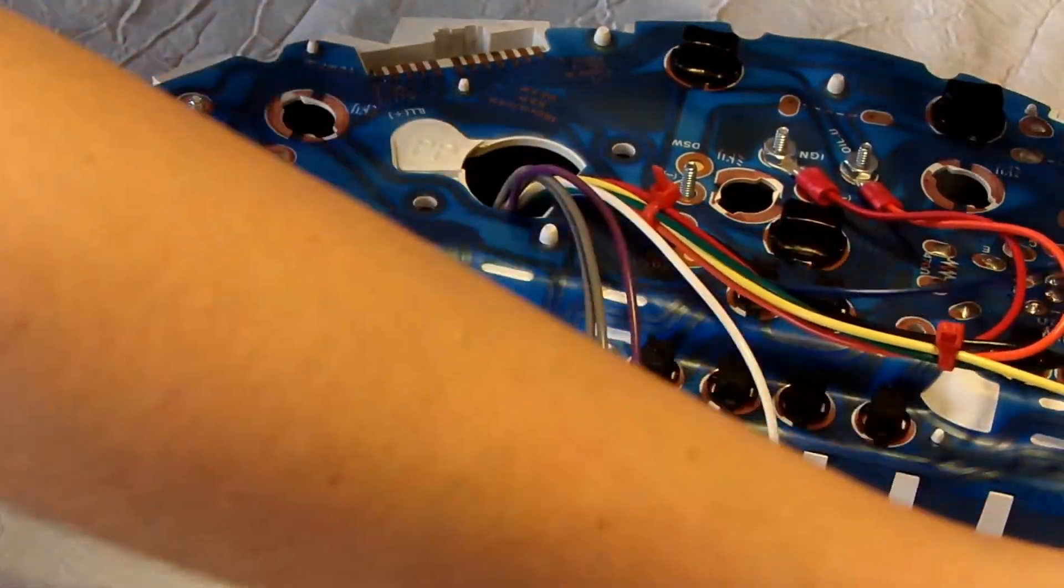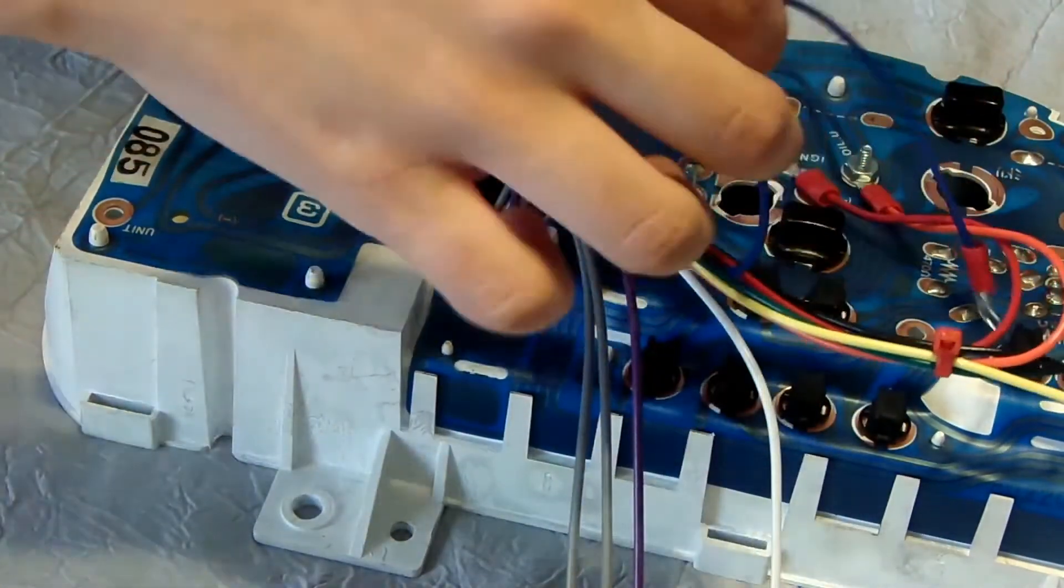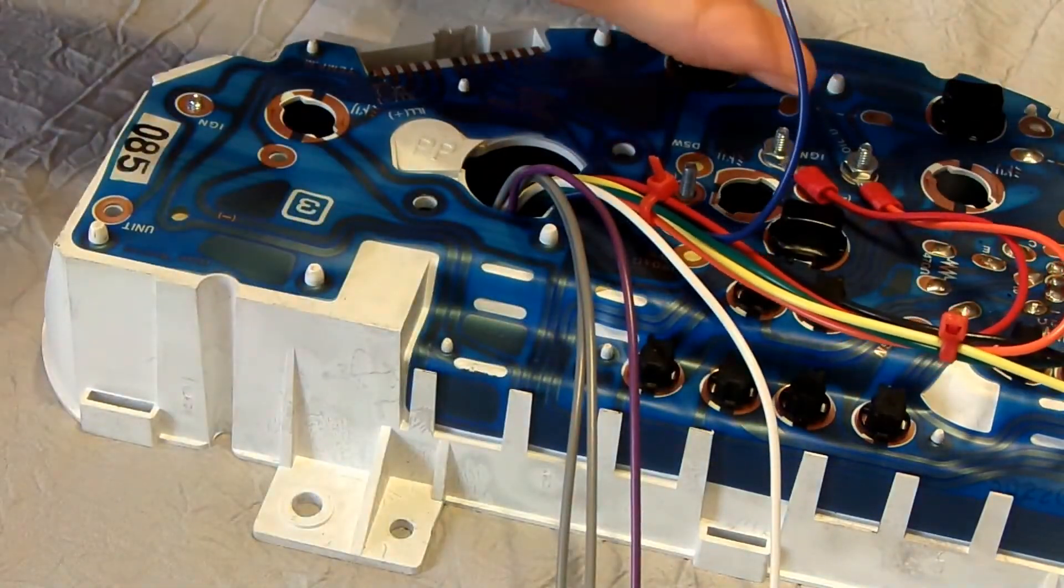Last, we have the blue wire and the black wire. The blue wire is for the temperature sending unit, which will later be replaced.